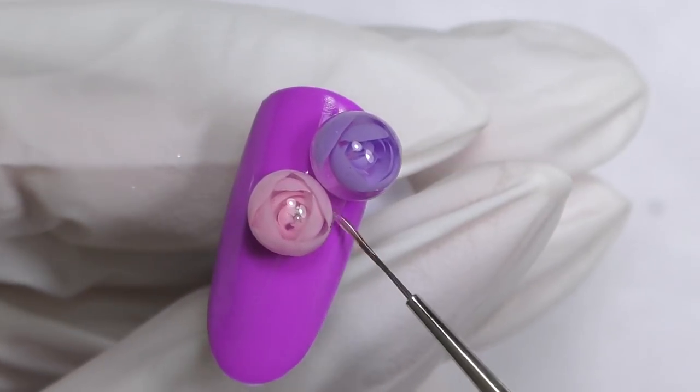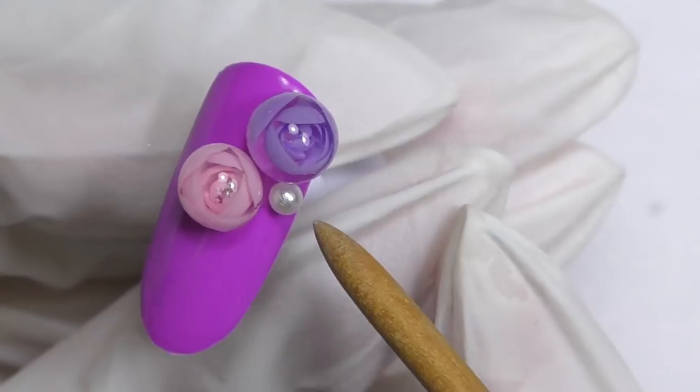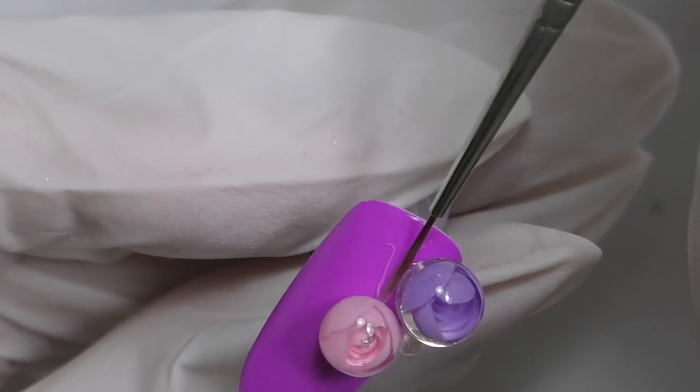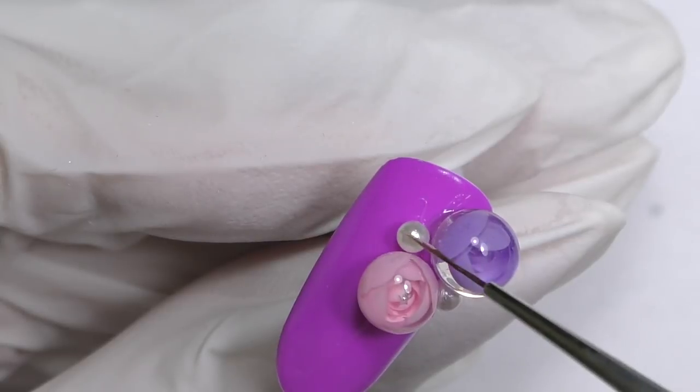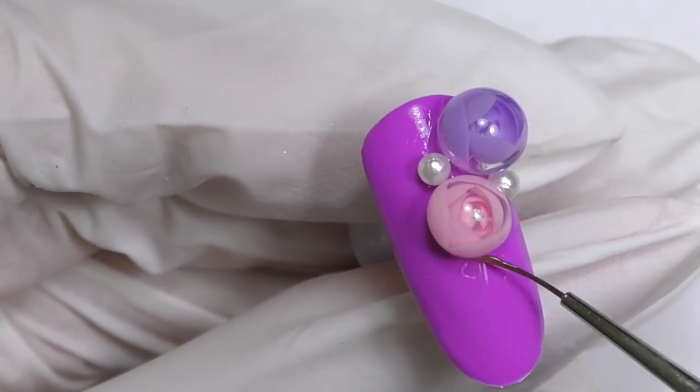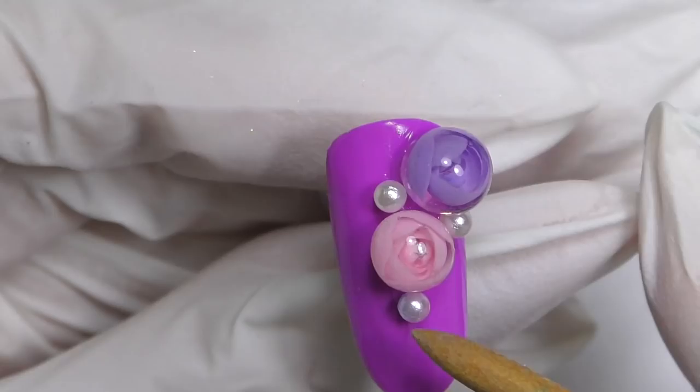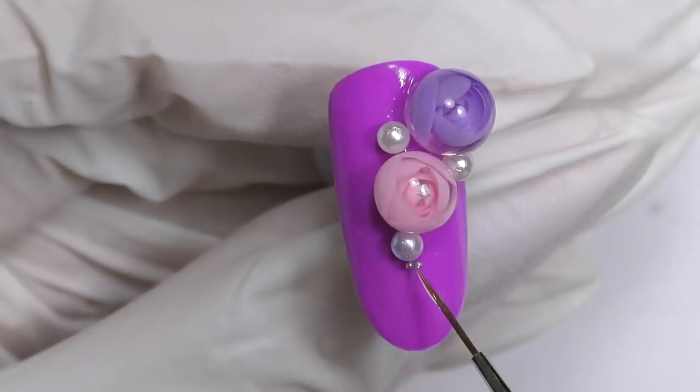So now we need to finish our composition, so I will outline the flowers and add some pearls. I'm using sphere pearls, but you can also use the semi-sphere, like the flat back ones. And I think we need to add another one right here, do not forget to apply gel first.